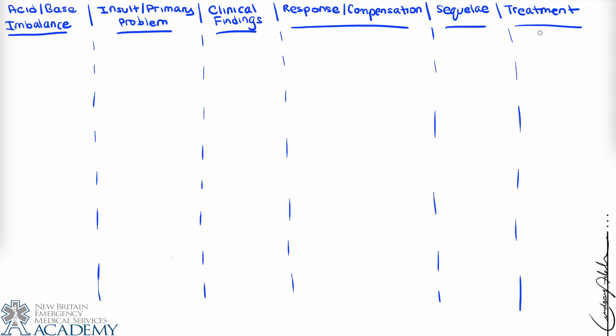The four categories are: respiratory acidosis, respiratory alkalosis, metabolic acidosis, and metabolic alkalosis. Two of these problems are respiratory-based and two are metabolic-based. Two are acidosis, meaning the pH of the blood has shifted below 7.35, and two are alkalosis, meaning the pH has shifted above 7.45.